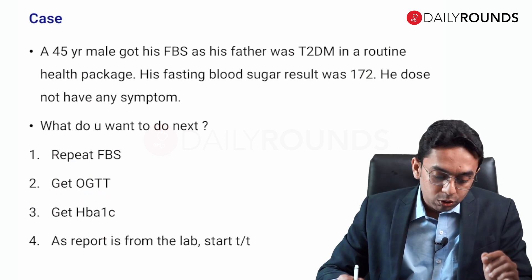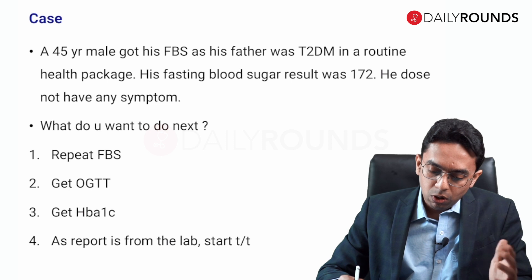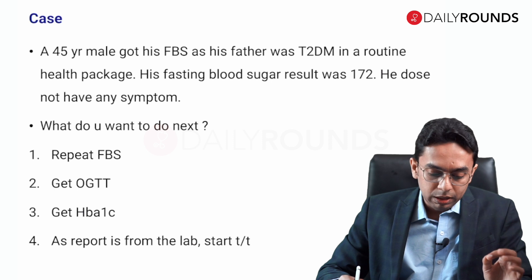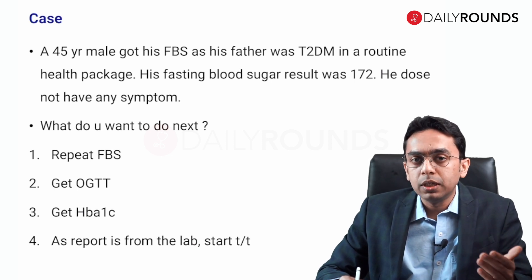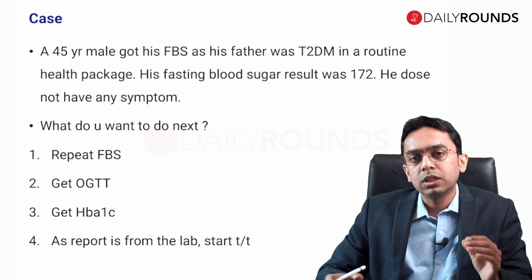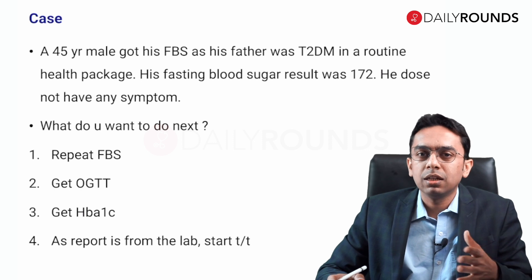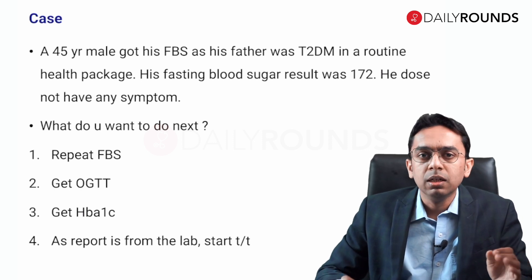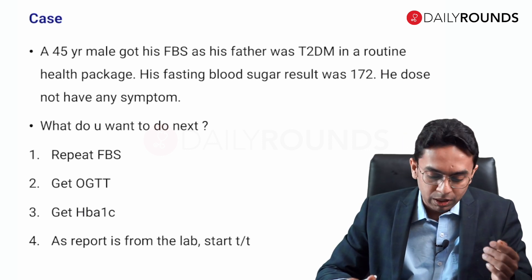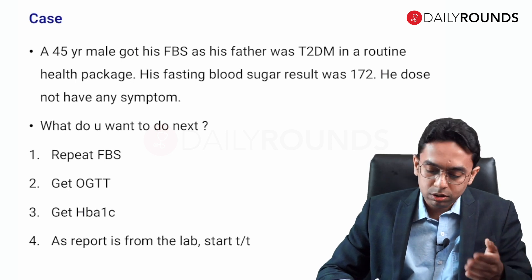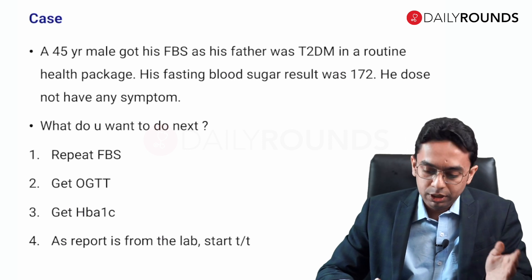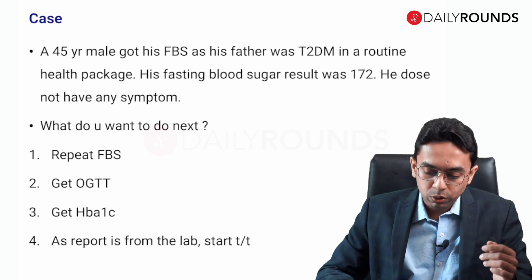Coming to another case. We have a 45-year-old male who got his fasting blood sugar from the lab as his father was diabetic, in a routine health package. This is how most of your OPD patients are coming now — they get all tests from labs offering packages: sugars, creatinine, lipid profile, thyroid — everything — and then ask what to do next. This 45-year-old male's fasting blood sugar was 172 and he does not have any symptom.